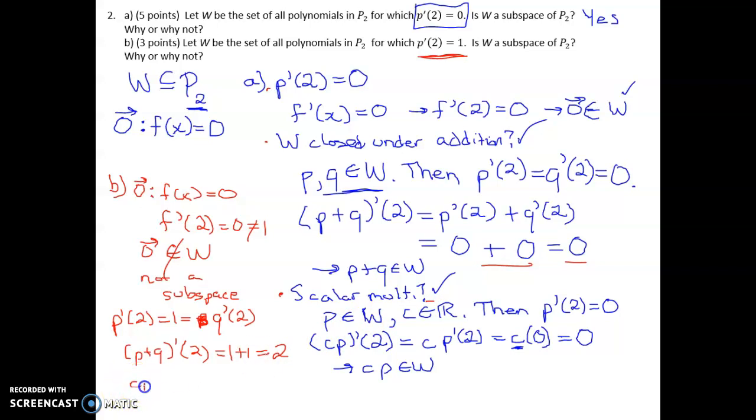And also, if you do C times P, take the derivative at 2, you're going to have C times 1. So you're going to get this scalar C, where C can be any number. It certainly doesn't have to be 1. And so it's not closed under scalar multiplication either. But again, to give a complete answer to B, you really just need to prove any one of these. And you can stop. To show that something is a subspace, you have to show that all three properties hold.